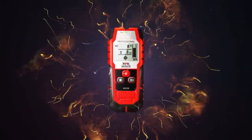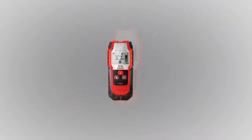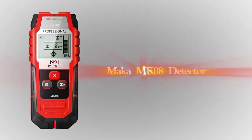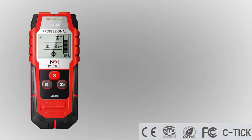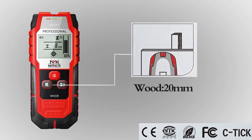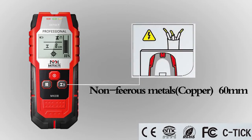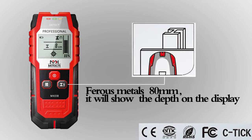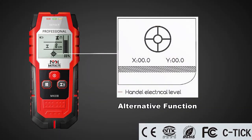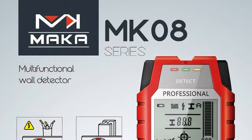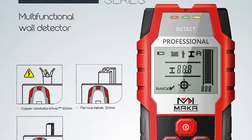MAGA MK08 handheld multifunctional detector can detect metal, iron and non-ferrous metal, such as colored and fine metal, wood beam and electric cables hidden in walls, roofs and floors. It can bring high efficiency to you during construction and avoid unnecessary troubles.